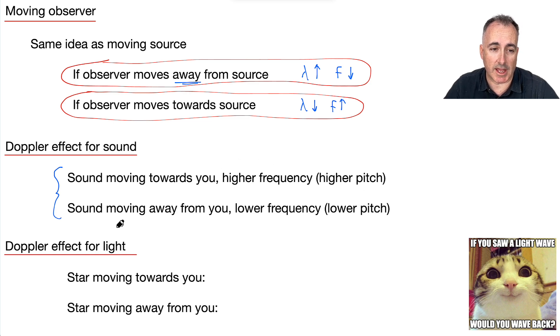The same kind of thing happens for light. If a star is moving towards you, what happens? Well, then the wavelength is going to be lower. What does that mean? If you remember your different colors, blue, for example, is around 400 nanometers. Red, for example, is around 600 or 700 nanometers.